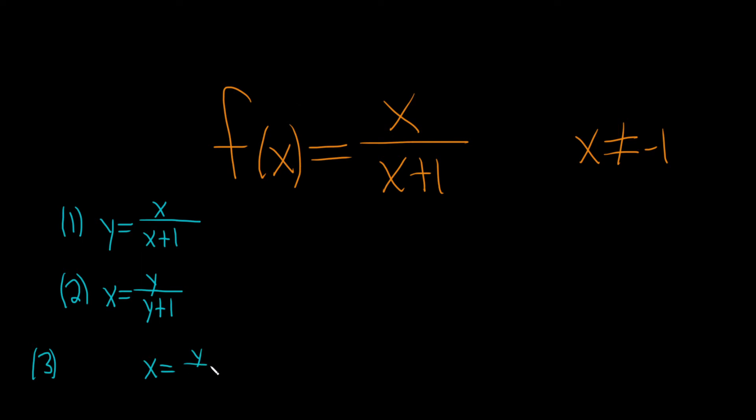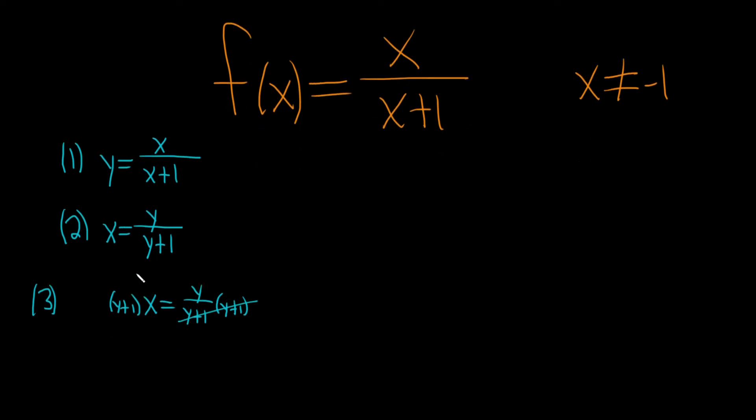To clear the fractions, we'll just multiply both sides by y plus 1. Now we can distribute the x here on the left. So x times y is xy, and then x times 1 is just x. And this is equal to y.